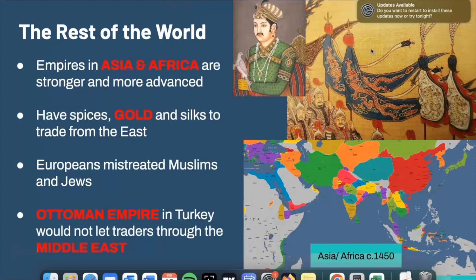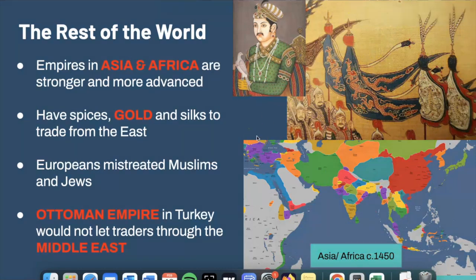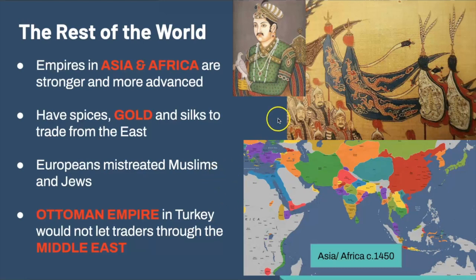Around this same time, Europeans are not too welcoming of outsiders, particularly from different religious backgrounds. Europe was mainly Christian and very exclusionary towards Jewish people — it was commonplace for Jewish people to be excluded into ghettos — and Muslims were expelled from places like Spain. This creates a big problem because the Ottomans basically create a blockade for European trade, not wanting Europeans to use the land trade routes to Asia due to their mistreatment of Muslims.